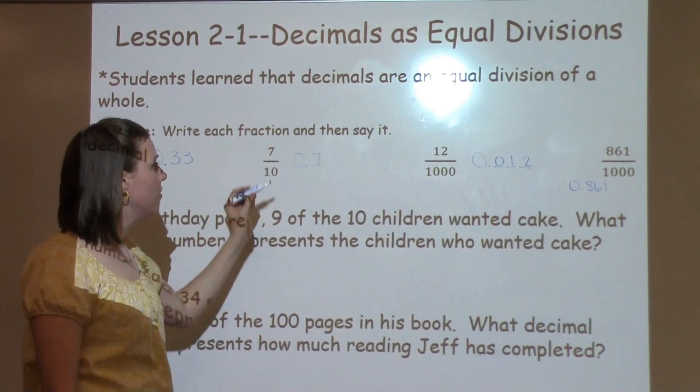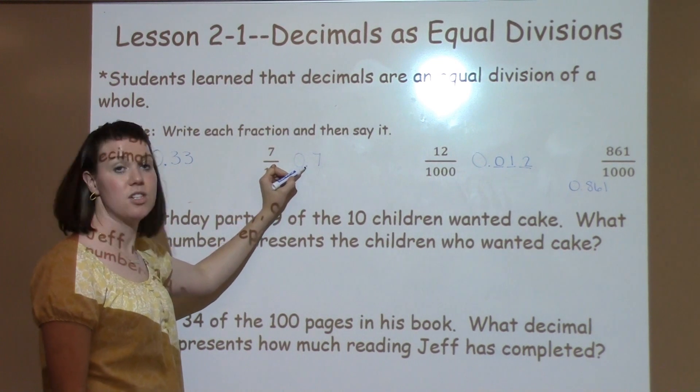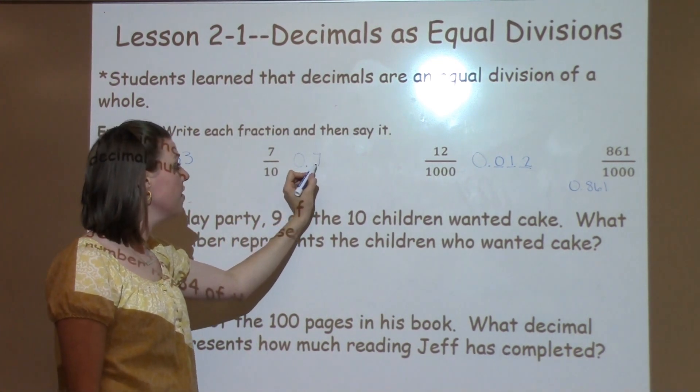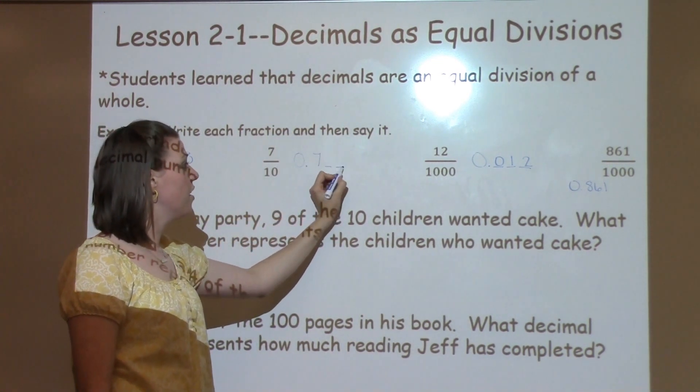Just reviewing the decimal place value, we have our 1, we have our decimal, which is our and. We've got our tenths, hundredths is our next one, and then our thousandths.